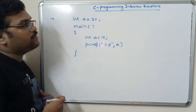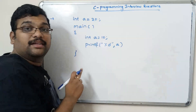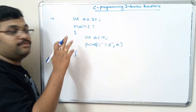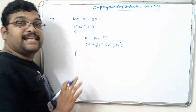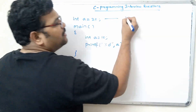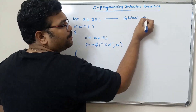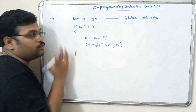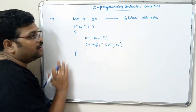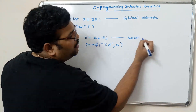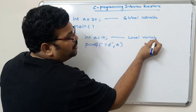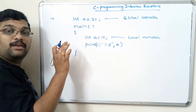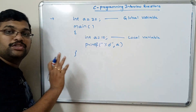Here we have 'a' equal to 20 and another 'a' equal to 10. We are declaring two variables with the same name, but there is a scope difference between them. This 'a' equal to 20 is the global variable — its value can be used in both the main function and any user-defined functions written outside the main. The 'a' equal to 10 is the local variable, so it can be used only within the main function itself.